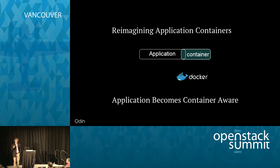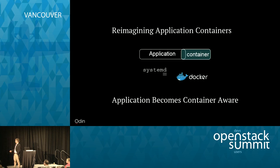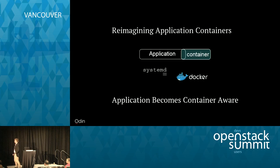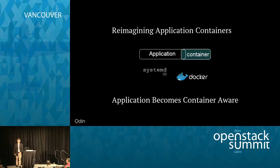Many people believe Docker was the world's first containerized application, but this is completely untrue. About five to ten years before Docker appeared, there was this thing called Systemd. Systemd grew up trying to use parts of the container subsystem to perform init tasks, making Systemd actually the world's very first container-aware application. It was doing this as early as 2008, 2009, and probably 2010.